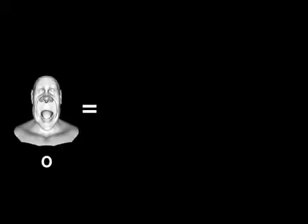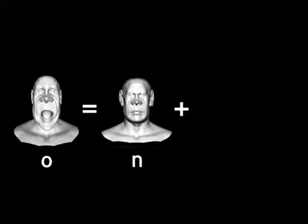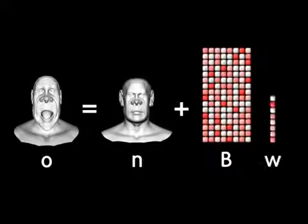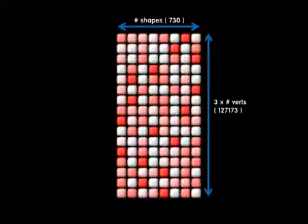Conventional blend shape processing consists of one vector addition and one matrix vector multiplication. The blend shape matrix B holds all the data for the target shapes and the displacements of the vertices, resulting in a large matrix with hundreds of columns and hundreds of thousands of rows.